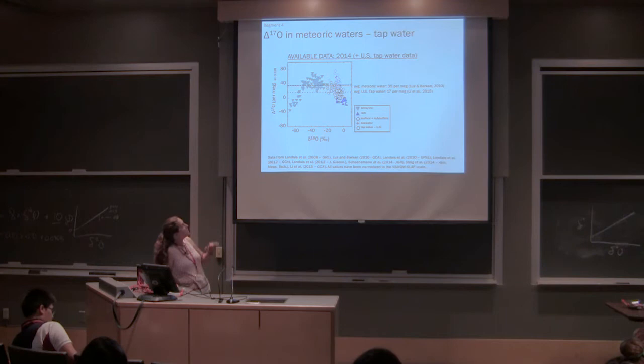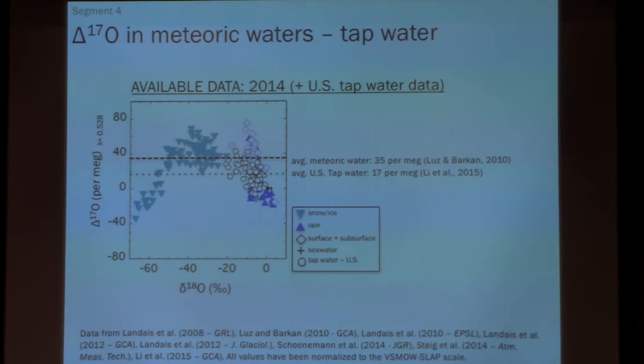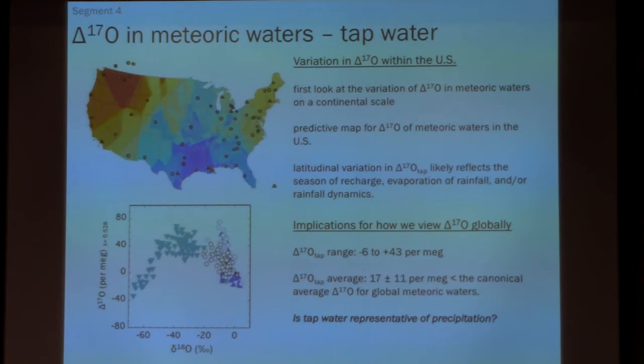Okay, so that's where Xu Ning's data now fall. The average U.S. tap water samples are 17 per meg, not 35 per meg. So we're continuing to understand what global 17O is and is global 17O even a useful number? Maybe not. Like what's the point of an average? There might be really different processes influencing 17O depending upon where you are. So maybe this global, it depends on what you're using that global number for.